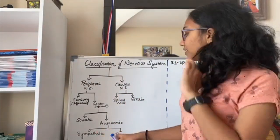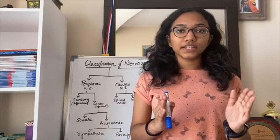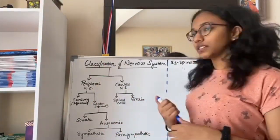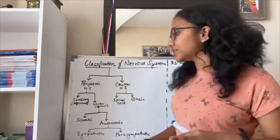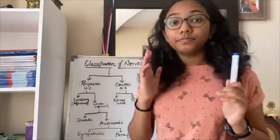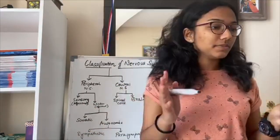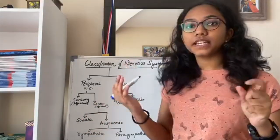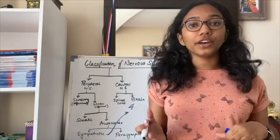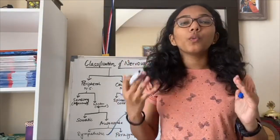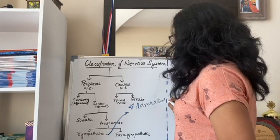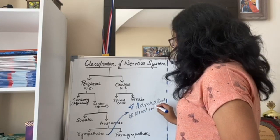The autonomic nervous system is again divided into sympathetic and parasympathetic. These two are antagonistic, meaning the functions of the sympathetic nervous system are countered by the parasympathetic nervous system, helping to maintain a balance. The sympathetic nervous system increases the body's activity — it increases adrenaline and noradrenaline, which are released when a person is in stress. It also increases heart rate and increases urine formation.